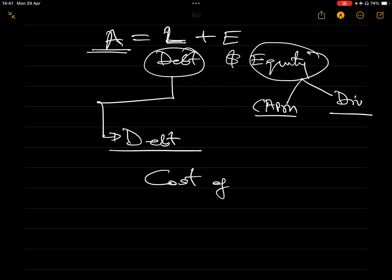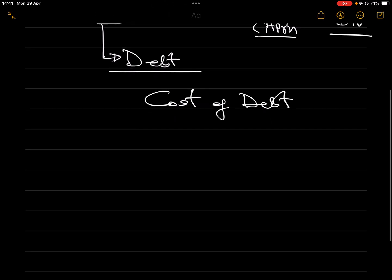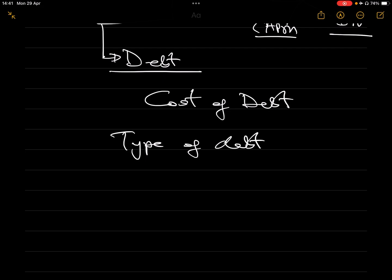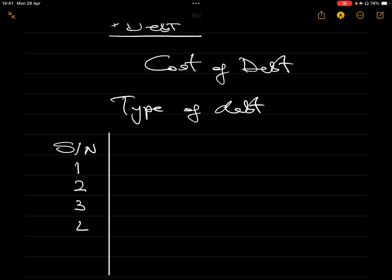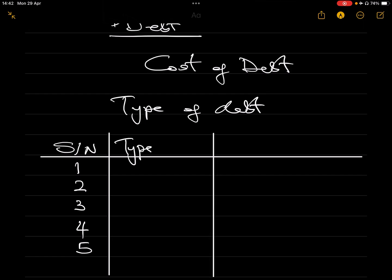How do we calculate cost of debt? I'm going to summarize this for you very quickly. Once you know the table I want to work on now — that's the most important part of knowing what cost of debt is all about — I will solve some questions and from there you build your capacity. So cost of debt depends on the type of debt we are looking at. It's not like equity, which is universal. For cost of debt, the type of debt will determine the formula you use, and that is what I've summarized on a table. There are about five types.